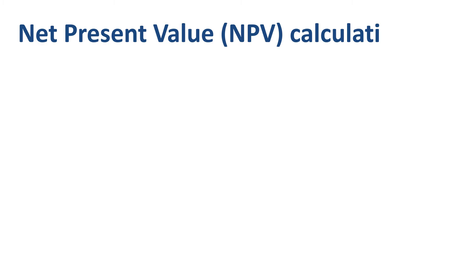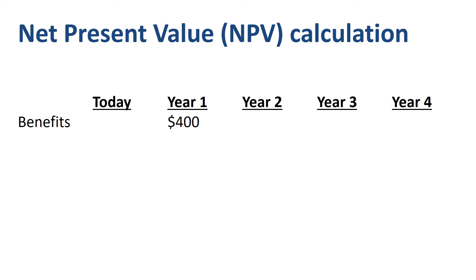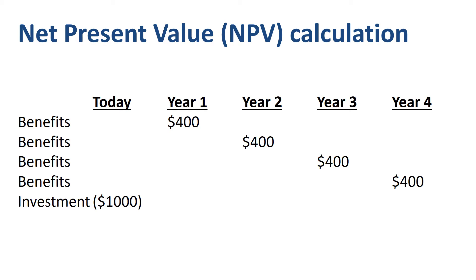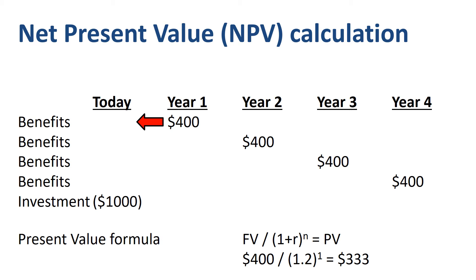Let's perform a net present value calculation step by step. What is the present value of all the cash inflows and cash outflows of the following project? The project is expected to provide 4 years' worth of benefits of nominally $400 per year, and an investment today of $1,000 to launch the project. We take a fairly high weighted average cost of capital (WACC) of 20% in this calculation. WACC is a calculation of a firm's cost of capital in which each category of capital is proportionally weighted.